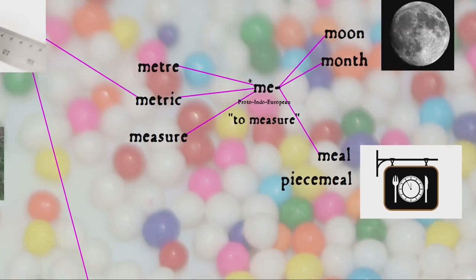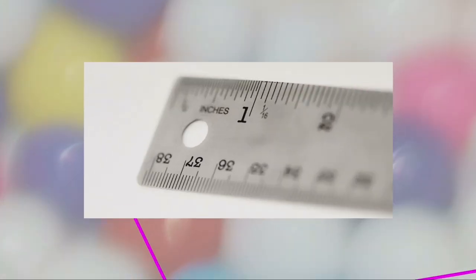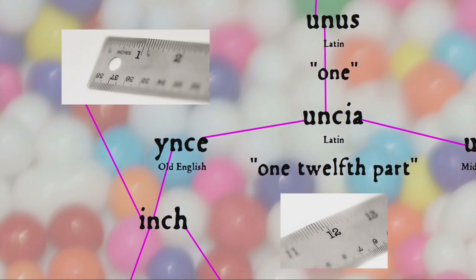To round out the imperial versus metric discussion, a quick word about the inch, to balance my earlier mention of the centimetre. Inch comes from Latin 'uncia', meaning one-twelfth part. There's that idea of a possible base-twelve counting system again, ultimately from Latin 'unus',